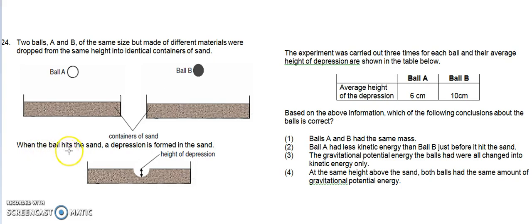When the ball hits the sand, a depression is formed. The height of depression was recorded. The experiment was carried out three times for each ball, and their average heights of depression are shown in the table below. The average height of depression for ball A is 6 centimeters, while the average height of depression for ball B is 10 centimeters.